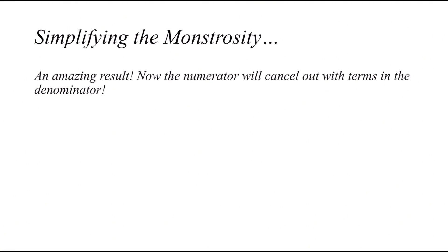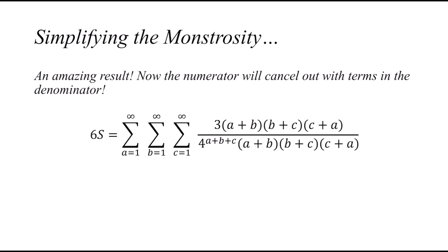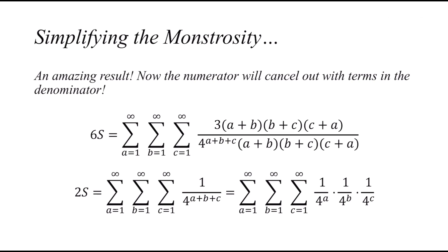And we could simplify this really monster result. So 6S will be equal to this really complicated expression, which is what we added of the six permutations of ABC. And since (A+B)(B+C)(C+A) cancels out, we get 2S equals to that symmetric sum of 1/4^a times 1/4^b times 1/4^c, all of them are reciprocal.